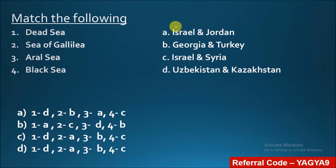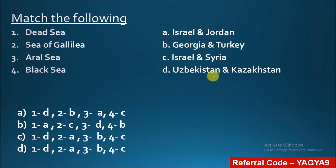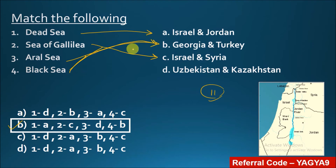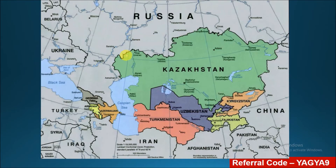Next question: Dead Sea, Sea of Galilee, Aral Sea, and Black Sea — you have to match them to the countries they lie between. The options are: Israel, Jordan, Georgia, Turkey, Israel, Syria, Uzbekistan, Kazakhstan. The correct option is B: Dead Sea is between Israel and Jordan, Sea of Galilee is between Israel and Syria, Black Sea is between Georgia and Turkey, and Aral Sea is between Uzbekistan and Kazakhstan.